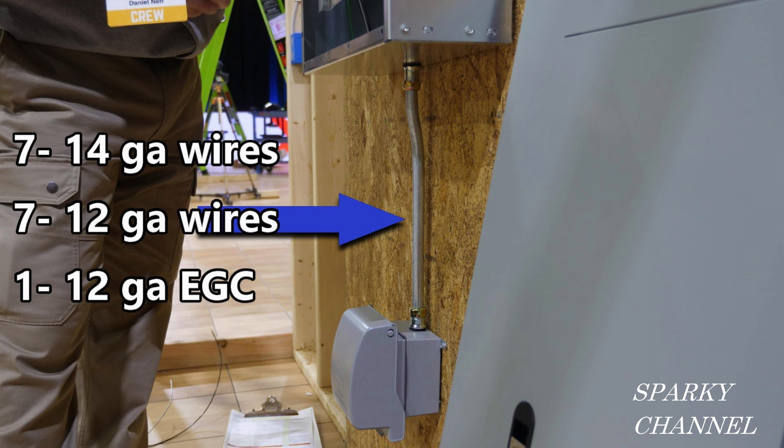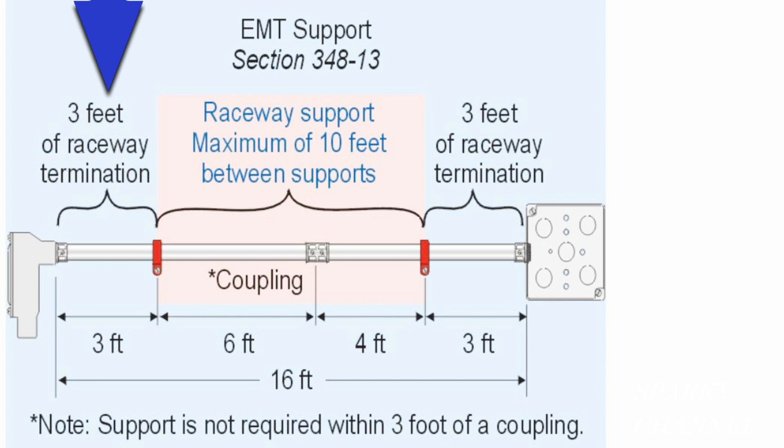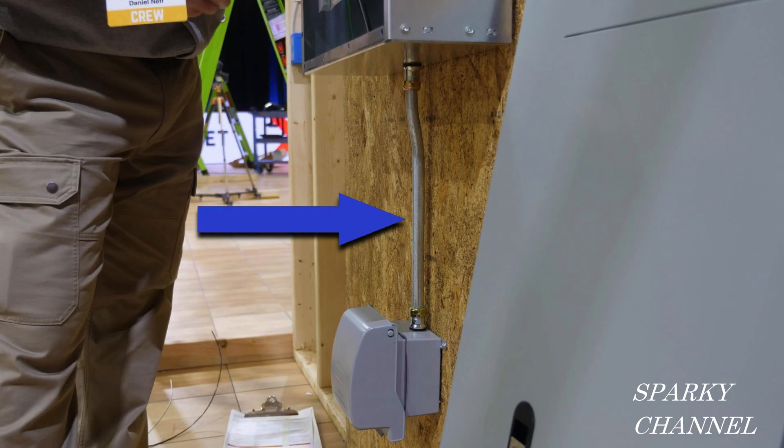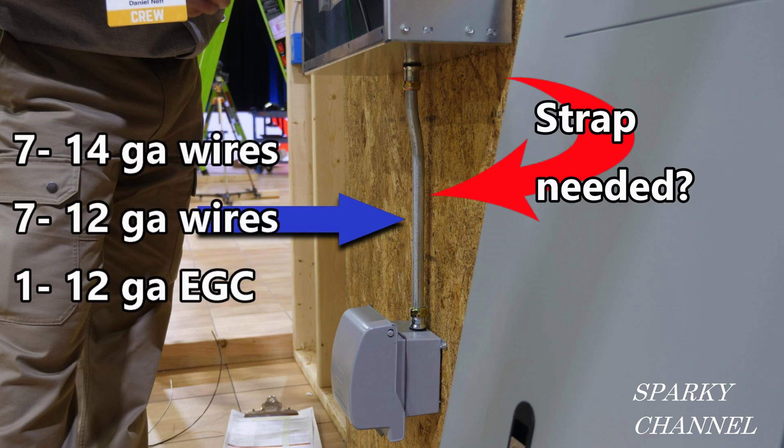Now let's check out and see if this piece of conduit needs a strap. Let's see if it needs to be strapped to that wall. Here's a graphic depiction of the code showing that a strap needs to be installed within three feet of raceway termination. Since our EMT is only 22 inches long, it does not need a strap. Let me know how you did in the comments section below.